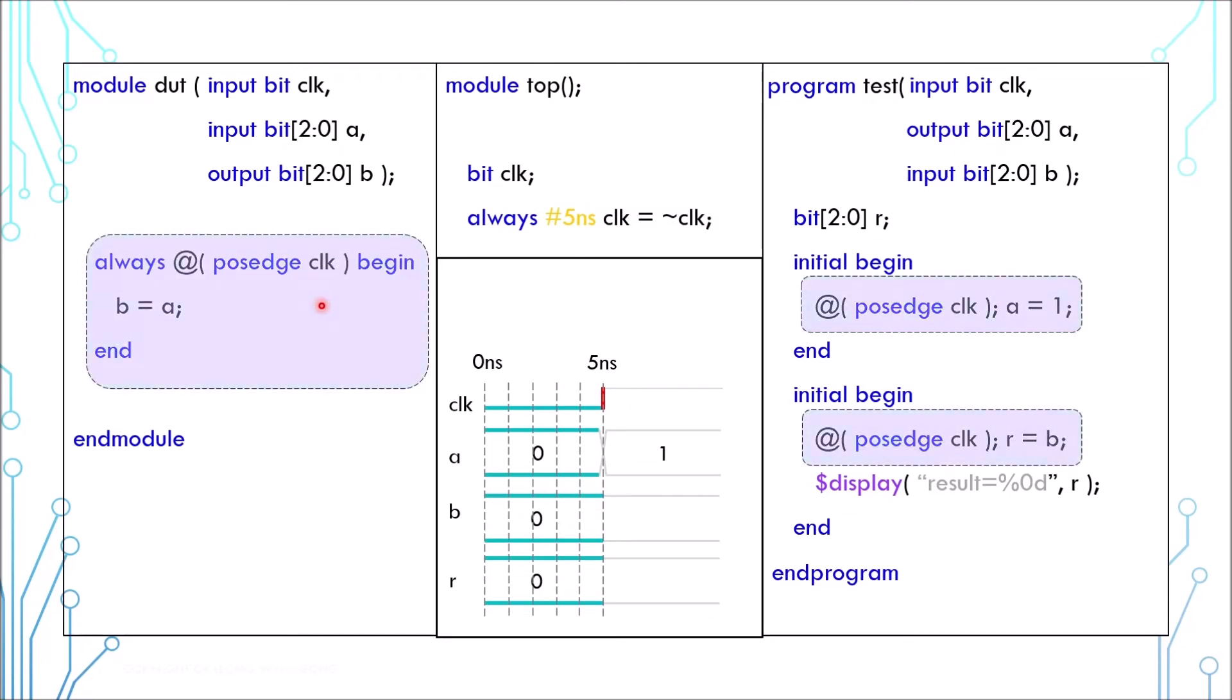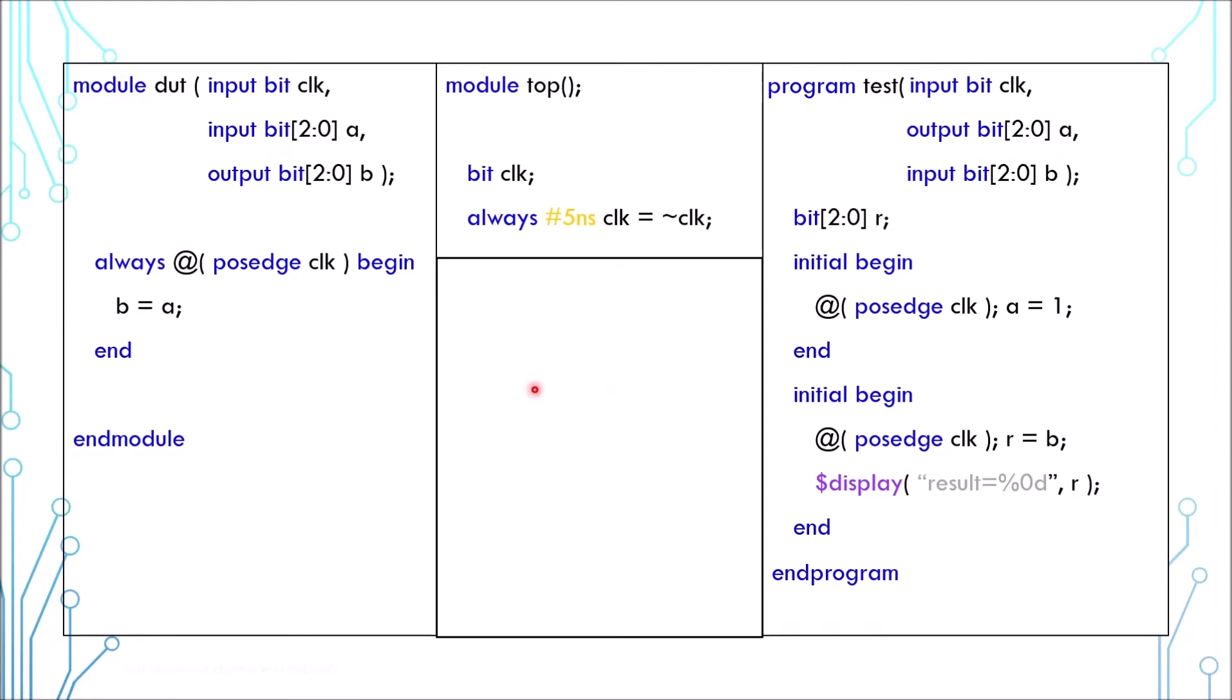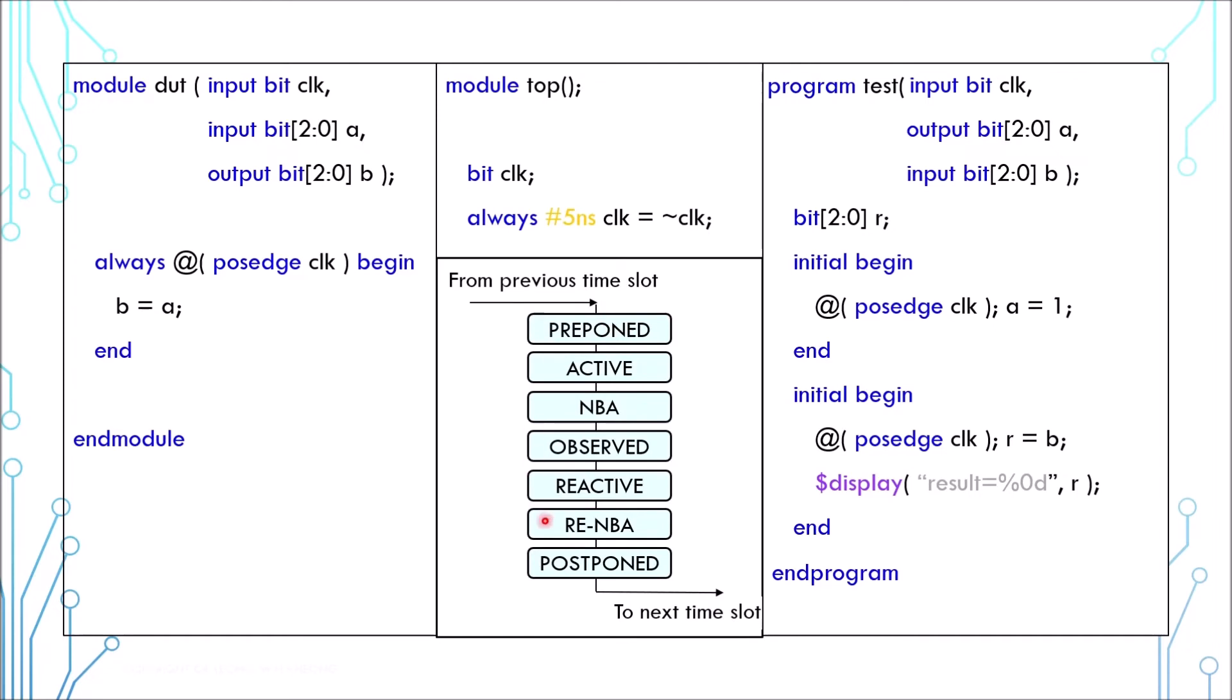Here the clock will be toggled, and following that these assignments need to be performed. Now let's look into what will actually happen. At every time step, the simulator goes through several stages, and this is an overly simplified diagram of the stages which is known as scheduling semantics: preponed, active, non-blocking assignment NBA, observed, reactive, reactive NBA, and postponed.